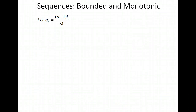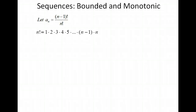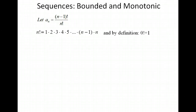Let's look at one more example: (n-1)! over n!. You may remember what a factorial is, so let's review. n factorial is all the numbers from 1 up to n multiplied together — that is 1 times 2 times 3 times 4 all the way up to n. By definition, 0 factorial is 1 and 1 factorial is also 1.